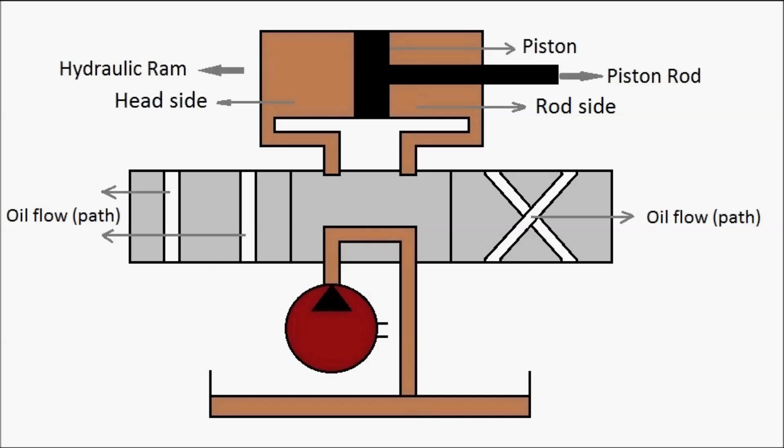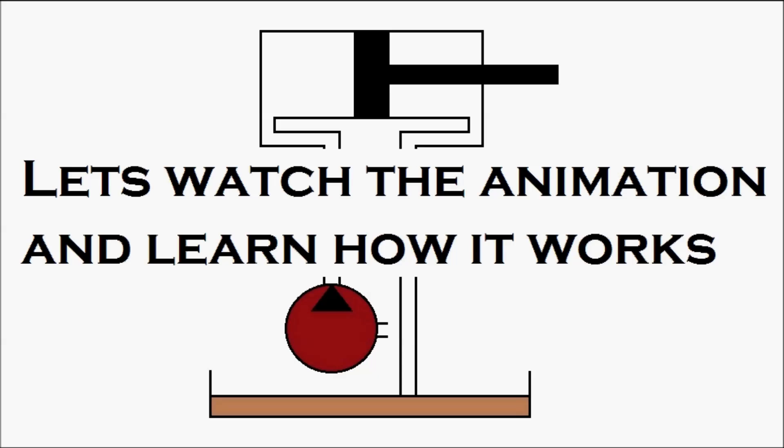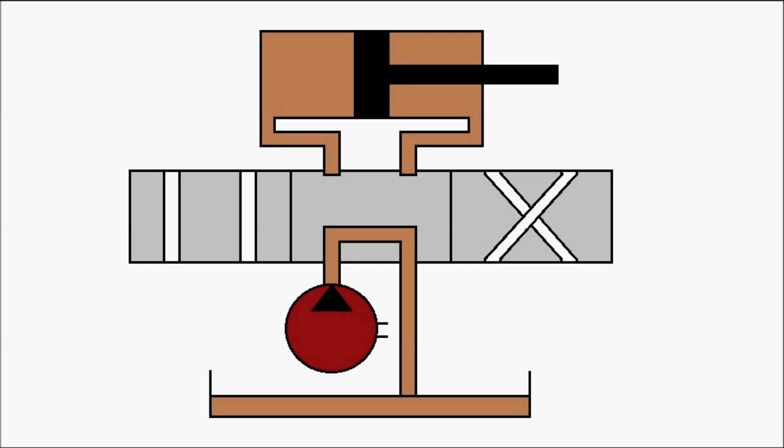There you can see the oil flow path — that's the path in each section through which the oil flows from the hydraulic pump towards the hydraulic ram. Now let's watch the animation and learn how exactly it works.